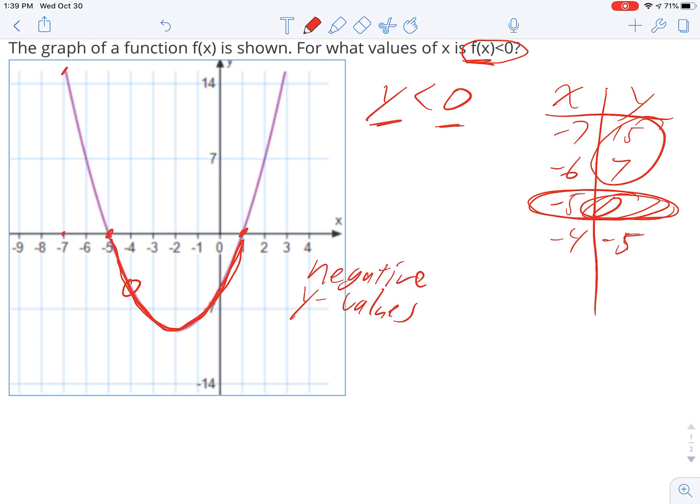So the question's asking me for what values of x are the y values below 0 or negative. And so it's all of the x values from negative 5 to 1. Right, so all these x values in here, negative 4, negative 3, negative 2, negative 1, 0, give you negative y's.